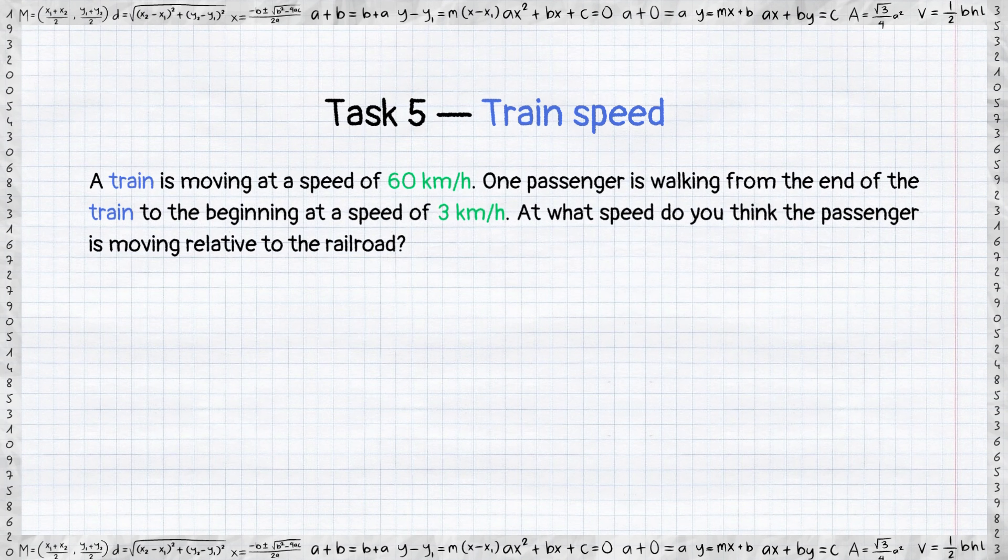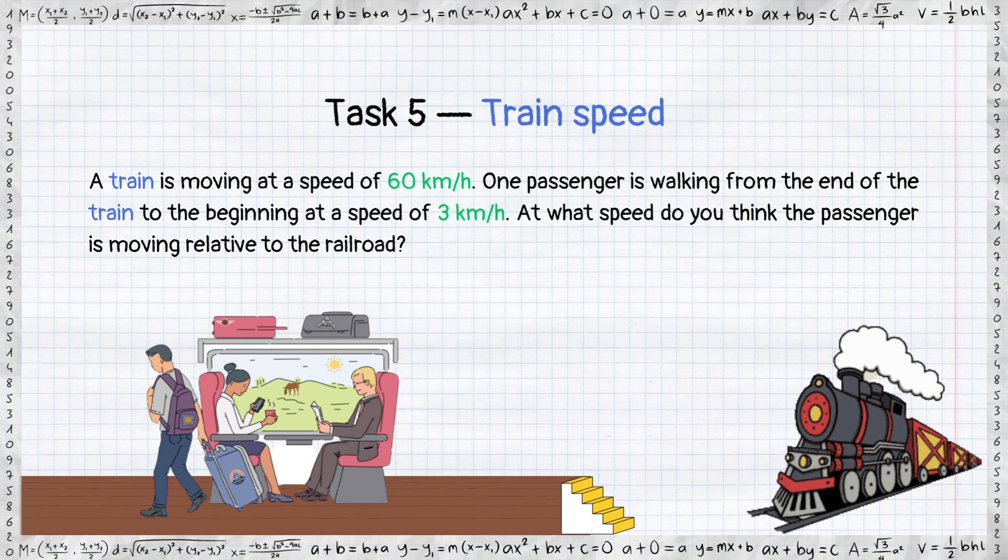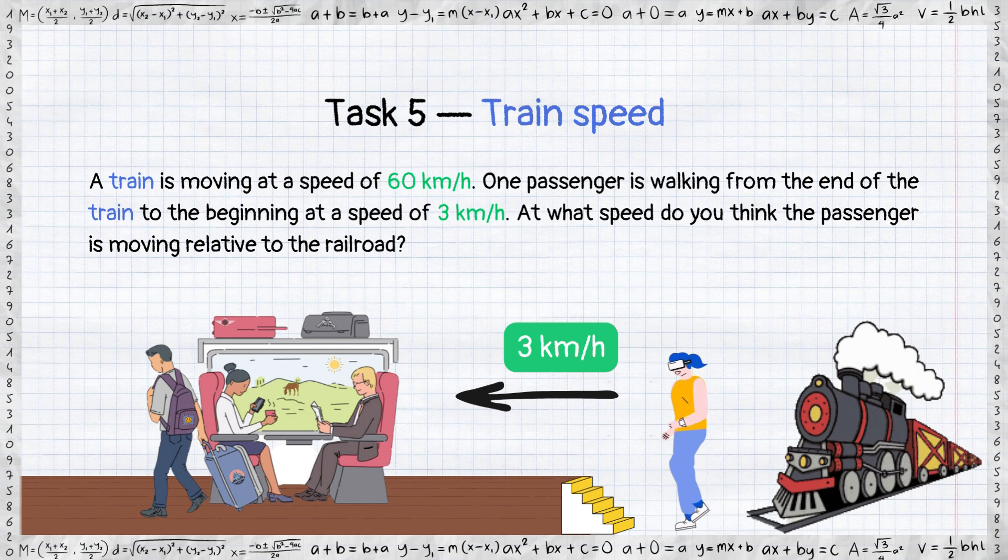A train is moving at a speed of 60 km per hour. One passenger is walking from the end of the train to the beginning at a speed of 3 km per hour. At what speed do you think the passenger is moving relative to the railroad?